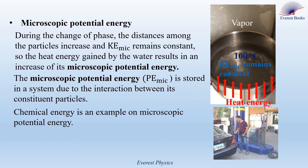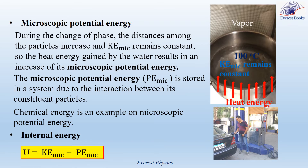Also, nuclear energy is another example of microscopic potential energy. Now, internal energy: any system possesses microscopic kinetic energy and microscopic potential energy. The sum of these two energies is called the internal energy of the system. So, U, which is the internal energy of the system, equals the microscopic kinetic energy plus the microscopic potential energy. Note that both the microscopic kinetic energy and the microscopic potential energy are always positive, so the internal energy of the system is always positive.